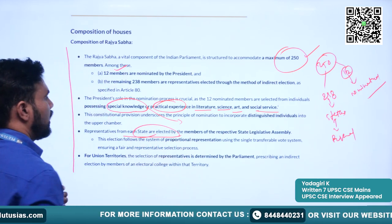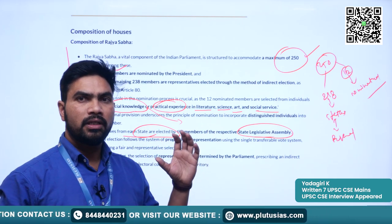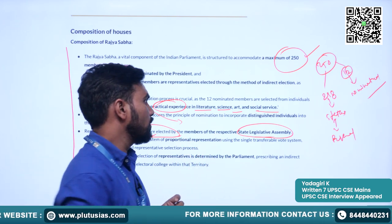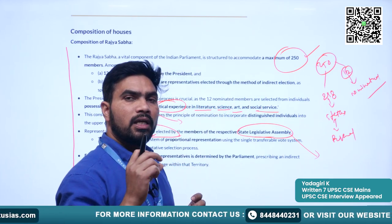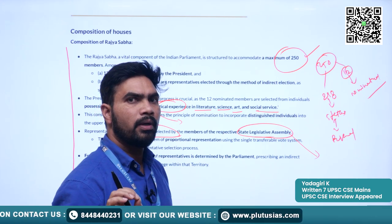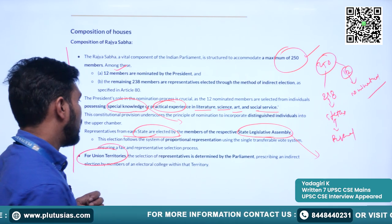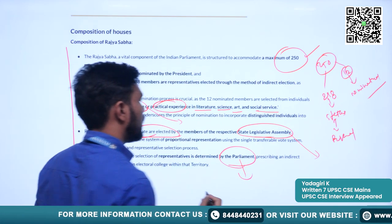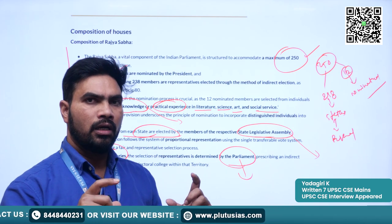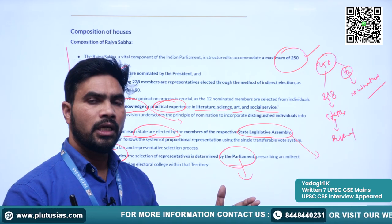Representatives from each state are elected by the members of the state legislative assembly. Remember — the members of the Rajya Sabha are elected by the respective state legislative assembly members. The members of the Legislative Council are not electing the members of the Rajya Sabha. Please try to remember this difference.